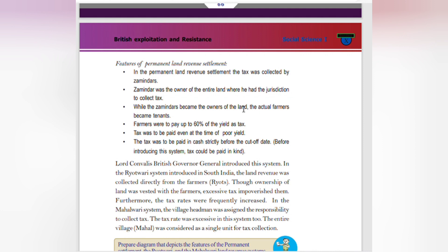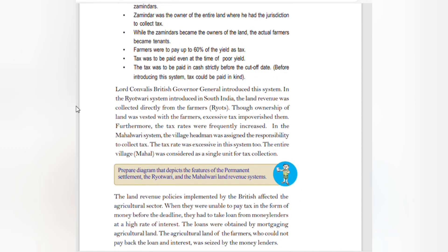The zamindar was the owner of the entire land and had jurisdiction to collect tax. While zamindars became owners of the land, the actual farmers became tenants. Farmers were to pay up to 60 percent of the yield as tax, even at times of poor yield, strictly in cash before the cutoff date. Before the system was introduced, tax could be paid in kind. Lord Cornwallis, the British Governor General, introduced this system. In the Ryotwari System introduced in South India, the land revenue was collected directly from the farmers, though excessive tax impoverished them.